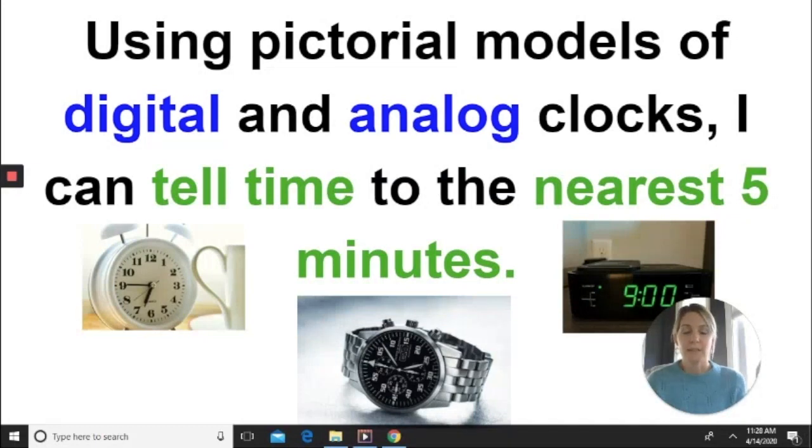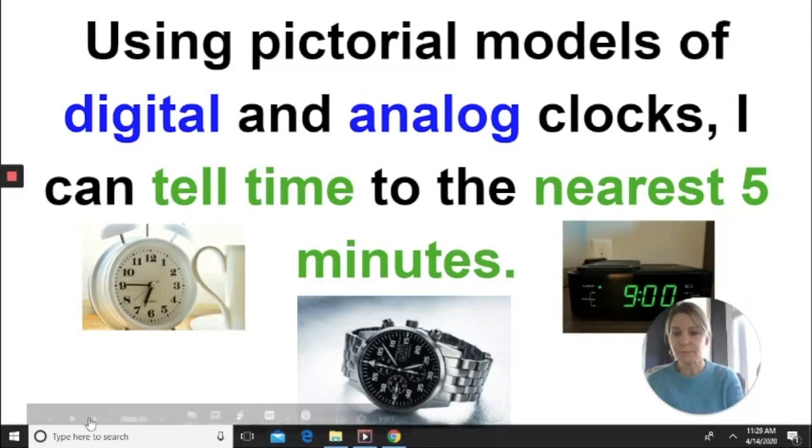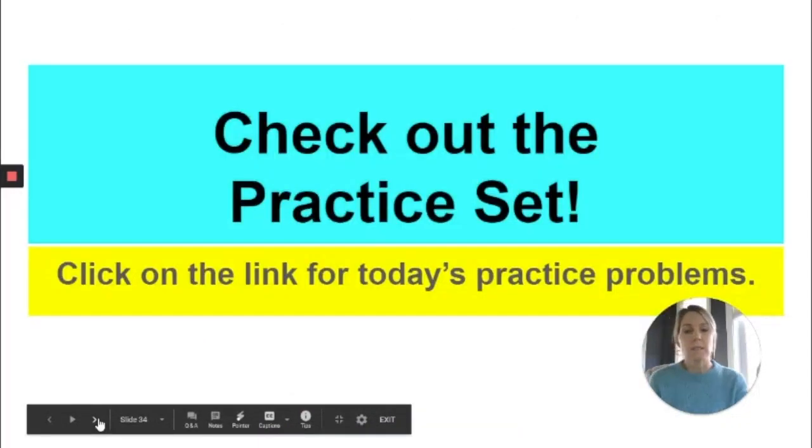Now that you all have seen the video, we can check out our learning target again and get started on our practice set. Our learning target for today was using pictorial models of digital and analog clocks. I can tell time to the nearest five minutes. And as you can see, we have both analog and digital clocks pictured below. And you can walk around your house and try to figure out if the clocks there are analog or digital. So let's get started on our practice set.